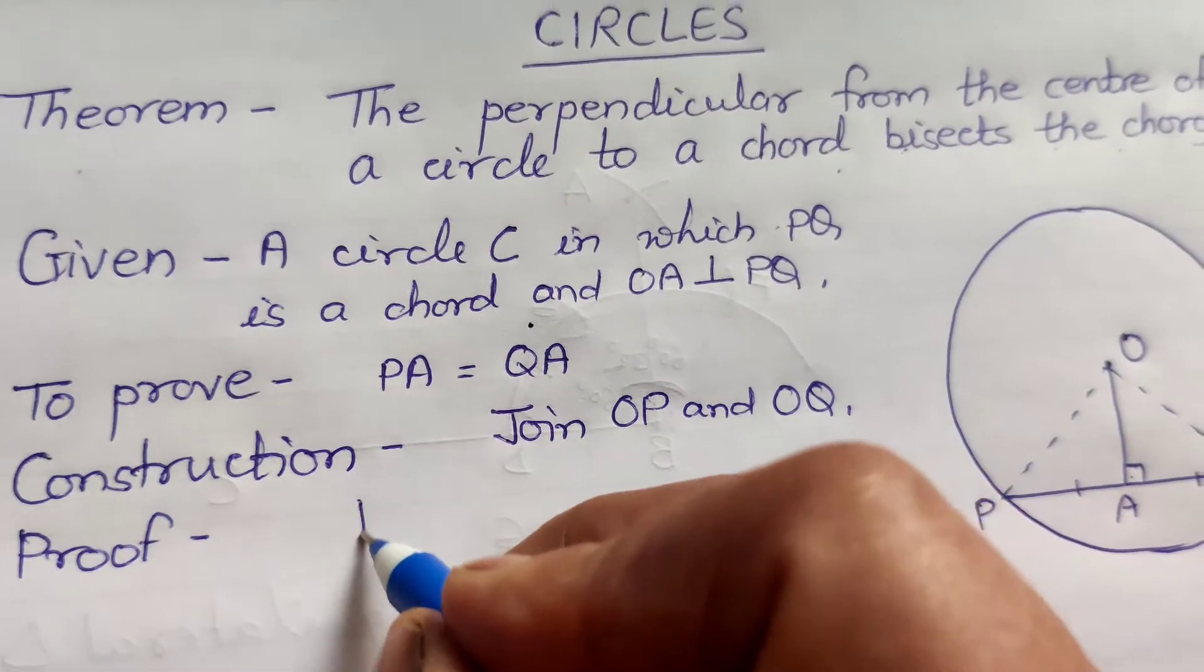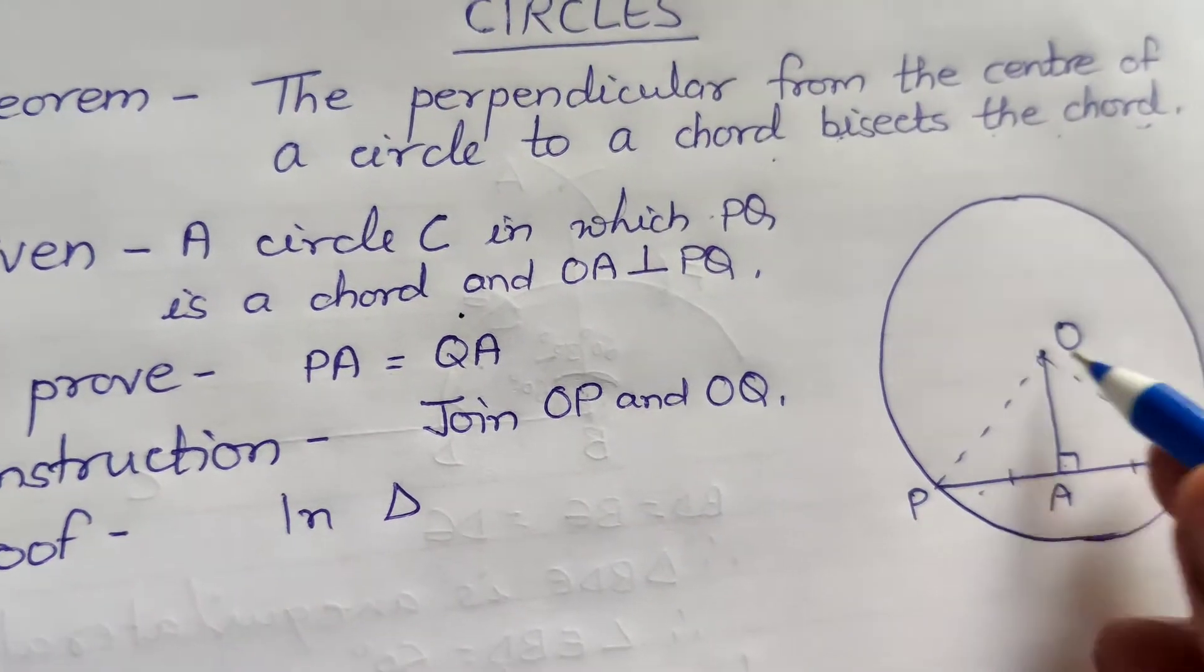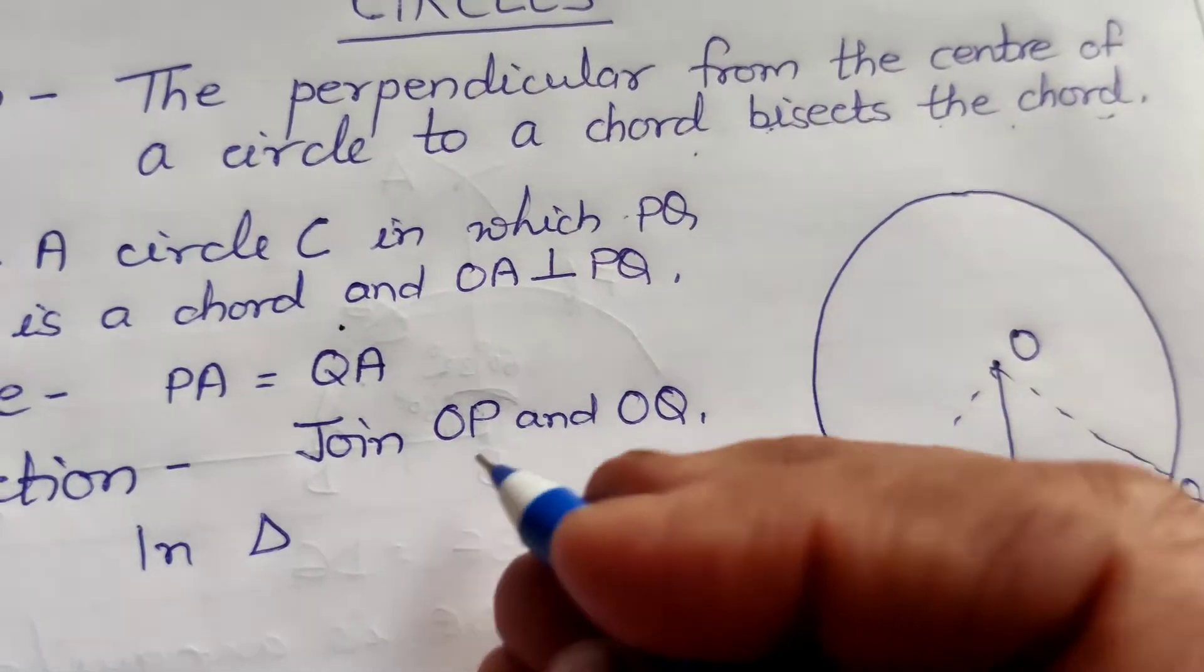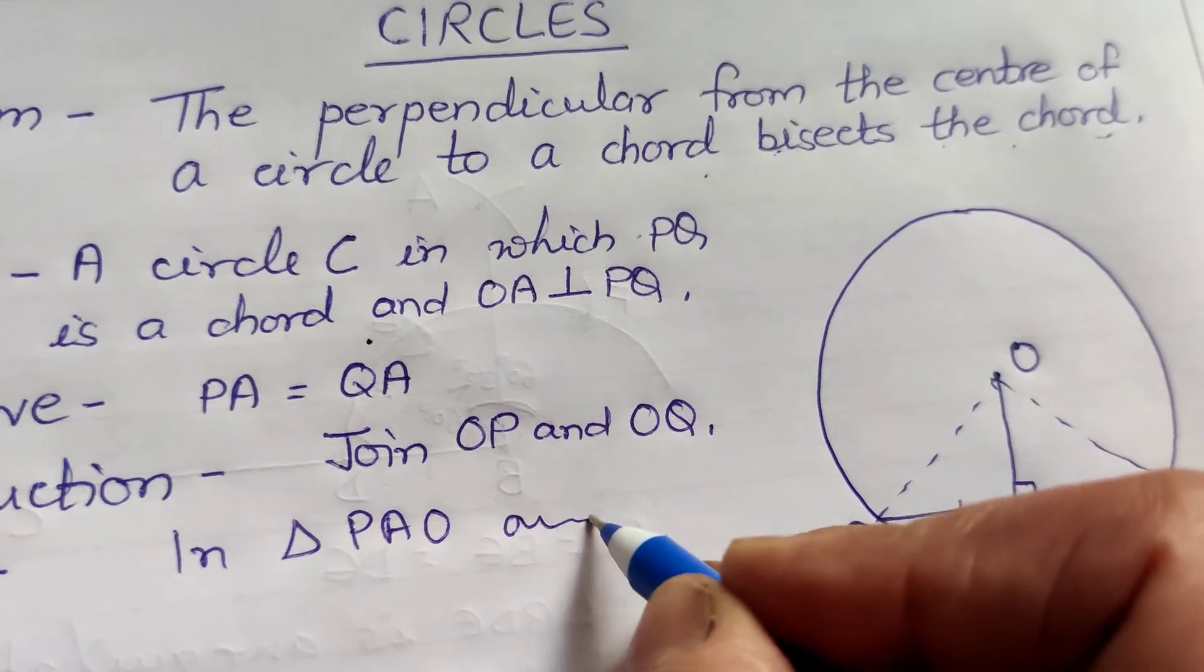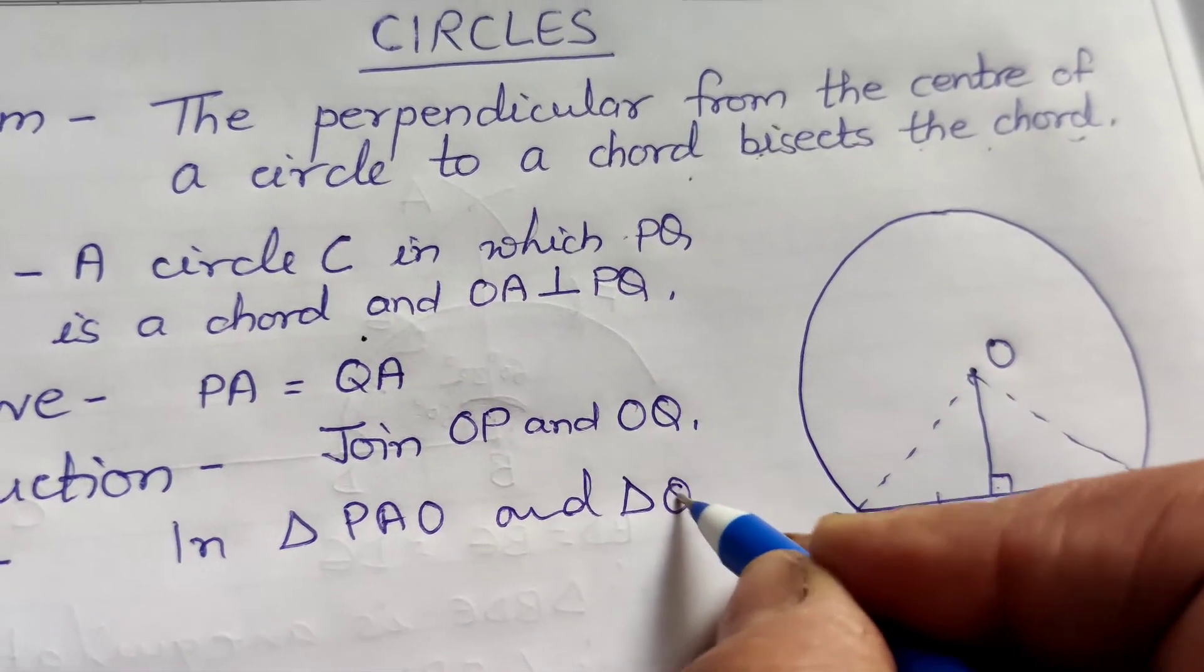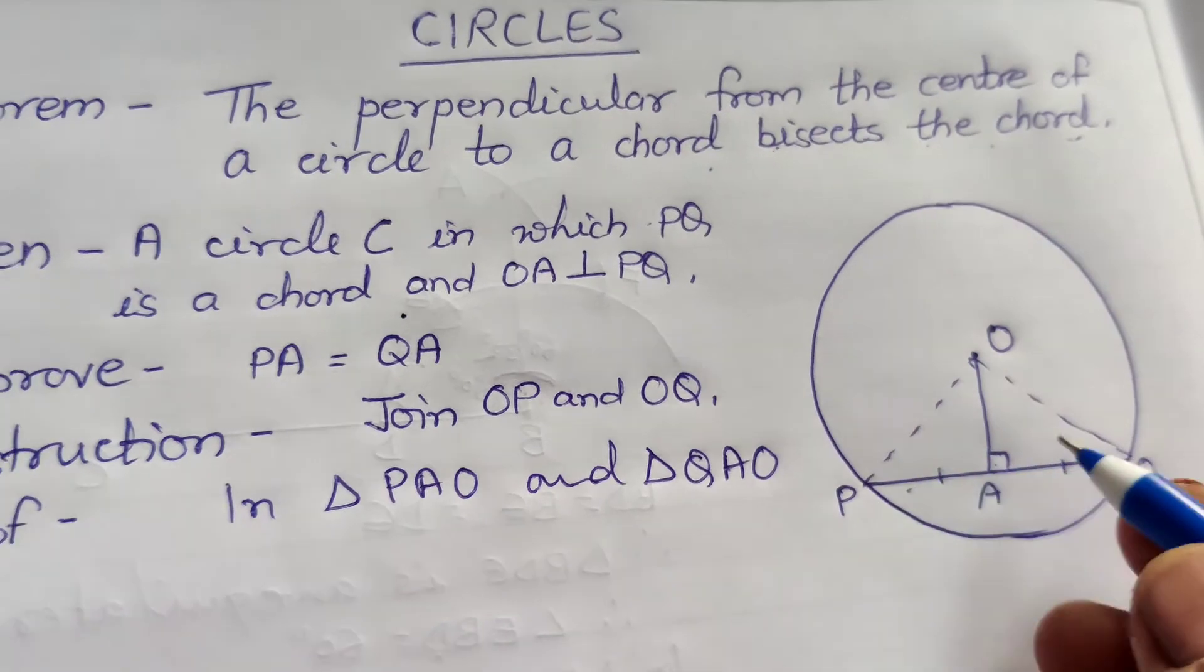Kaise? Do triangle lehenge in triangle PAO and QAO. PAO and triangle QAO. Dekhi hai, tene chica hai kiya bharabar hai?